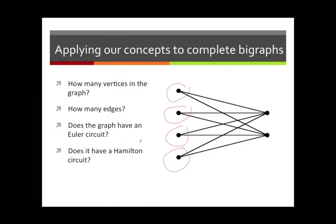The next question is: does the graph have an Euler circuit? That has to do with the degrees. This is certainly a connected graph, so we want to know what the degrees are. A vertex on the left has degree two, because there are two vertices on the right it connects to. All vertices on the left have degree two, and all vertices on the right have degree four. Since all those numbers are even, this graph does have an Euler circuit.